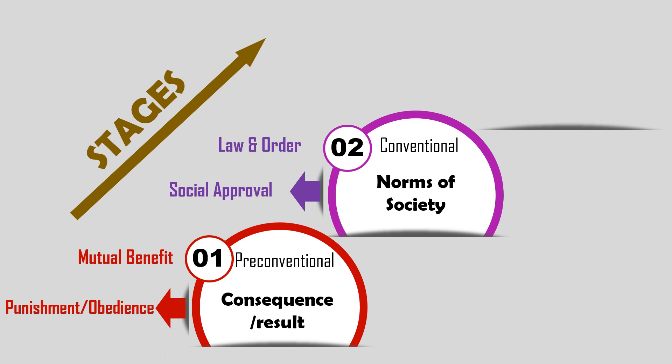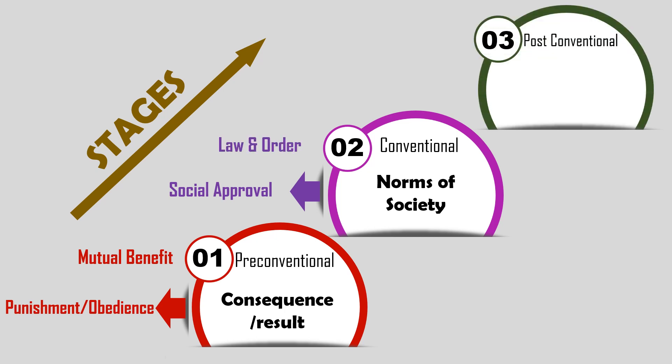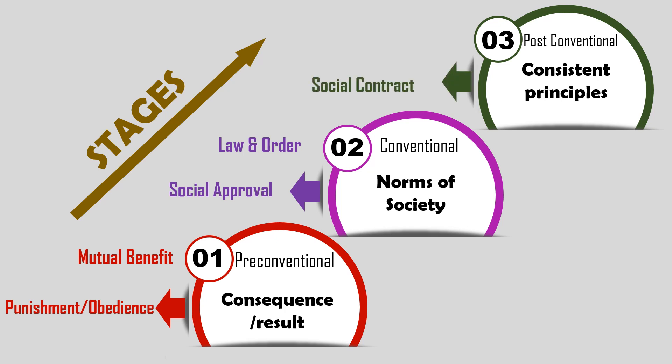The third level is post-conventional. Moral reasoning is based on enduring or consistent principles — not just recognizing the law, but the principles behind the law. The stages are: Stage 5 — Social Contract, and Stage 6 — Universal Principles.